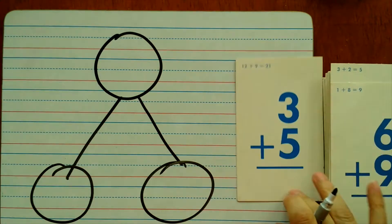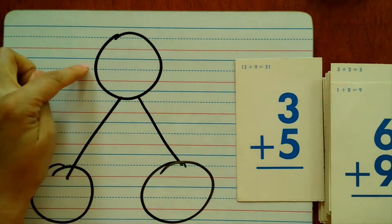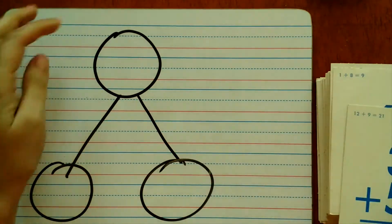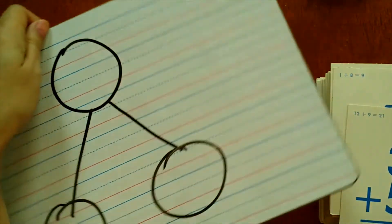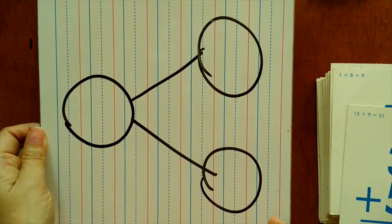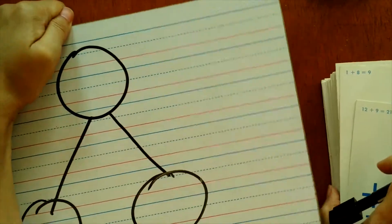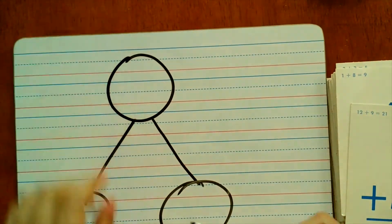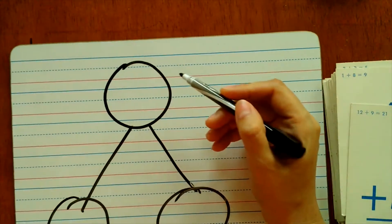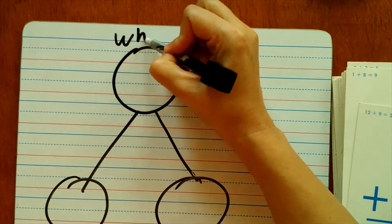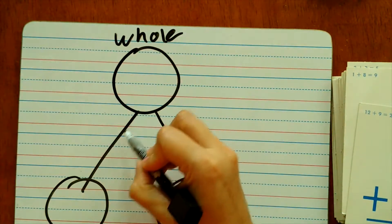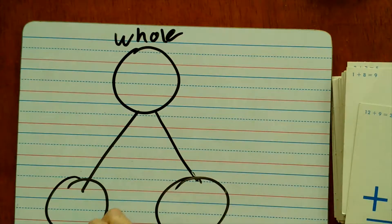As you might know, when you're doing these, the number bond might look this way or it might look that way, but it's pretty much the same thing. You always have two lines going to your whole number and one line going to each of its parts.